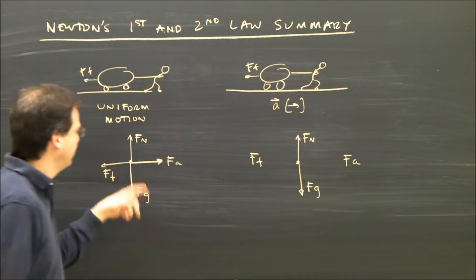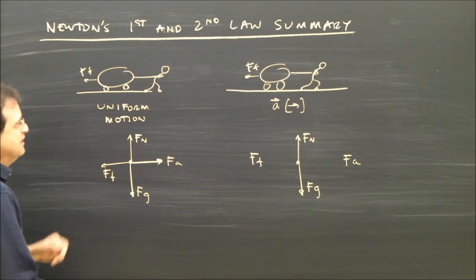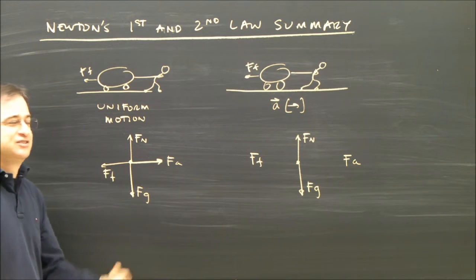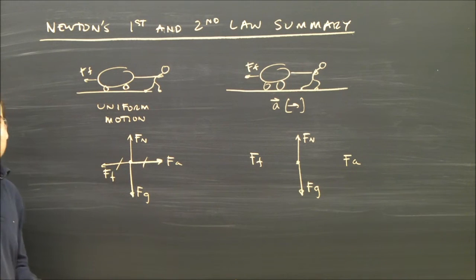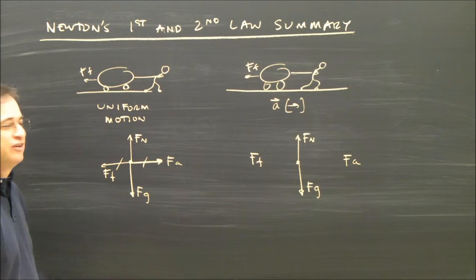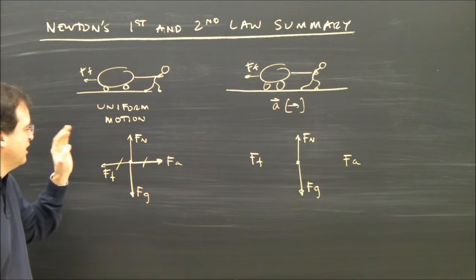So here's my free body diagram. Gravity, normal force, applied force and friction. It's not accelerating, so the forces must be balanced, which means the force I'm pulling and the force of friction must be the same. If I tell you the friction on this is 50 Newtons, how much is the applied force? Then you just have to say,